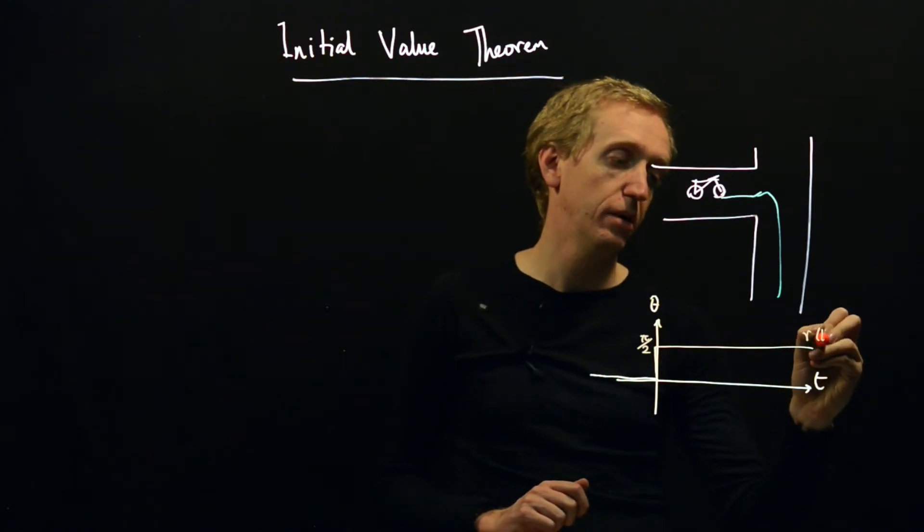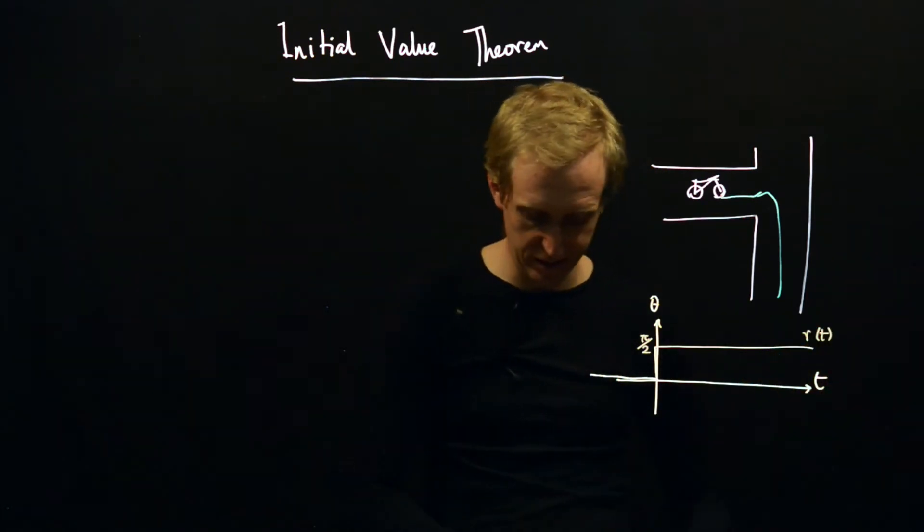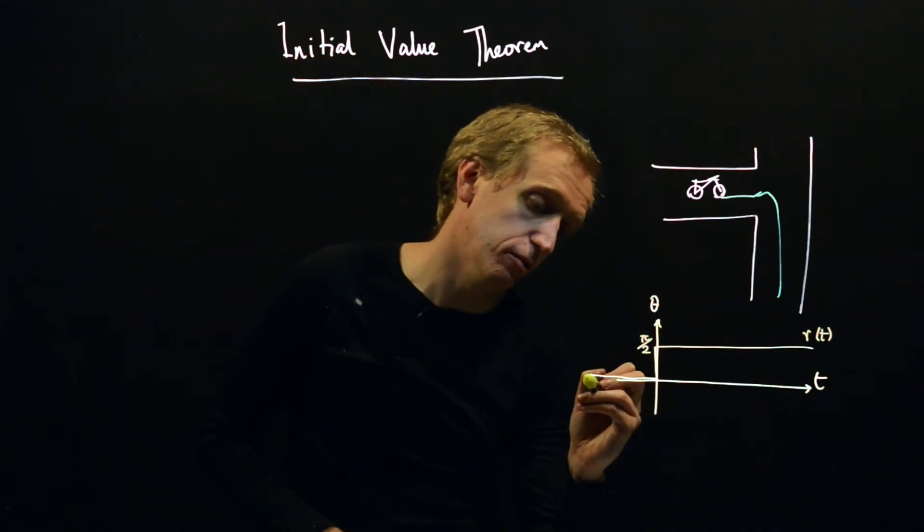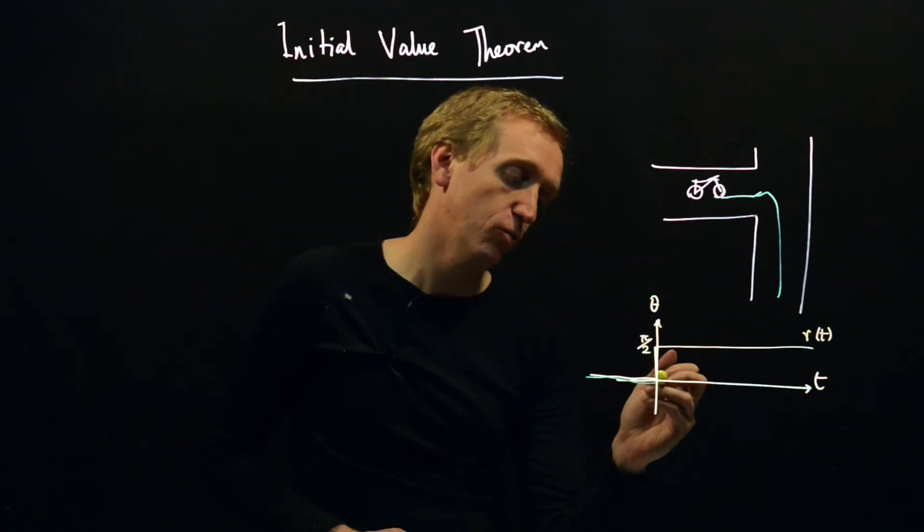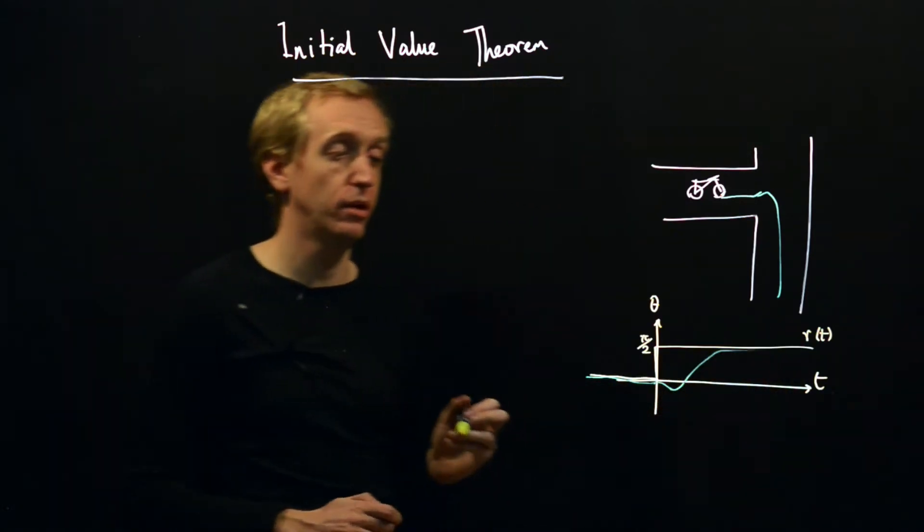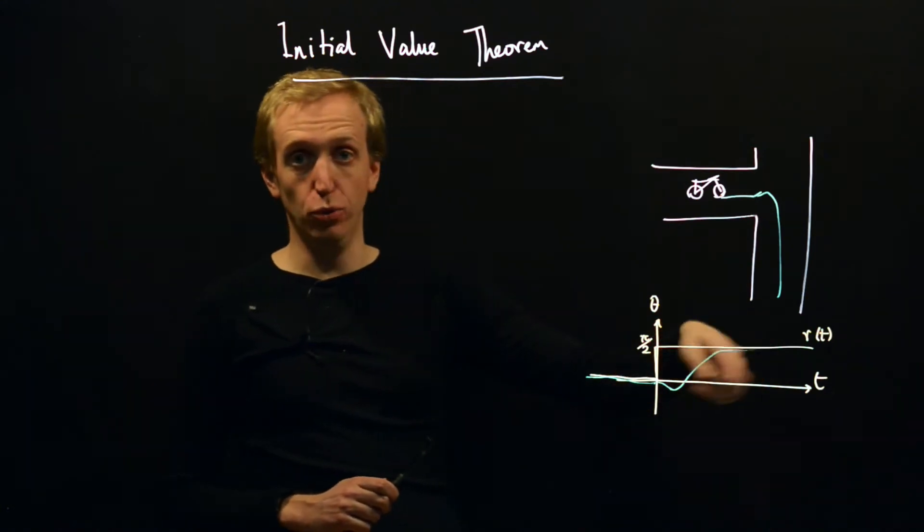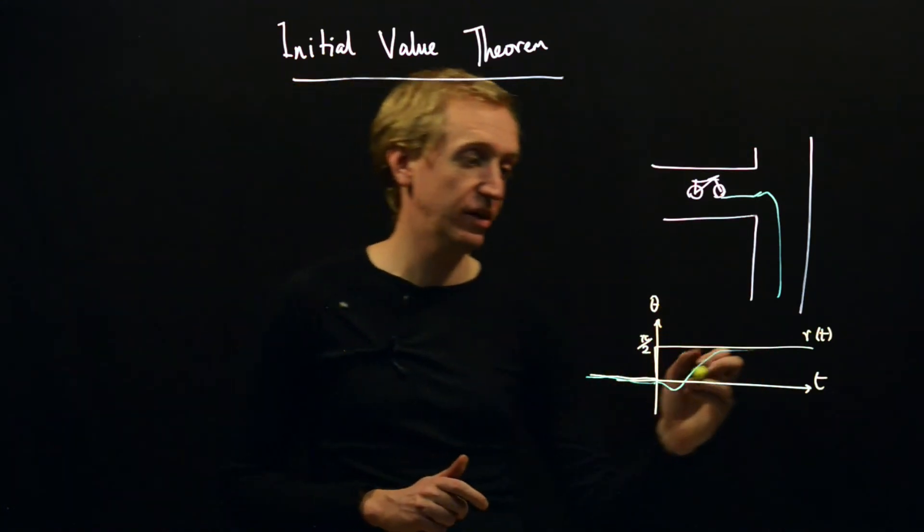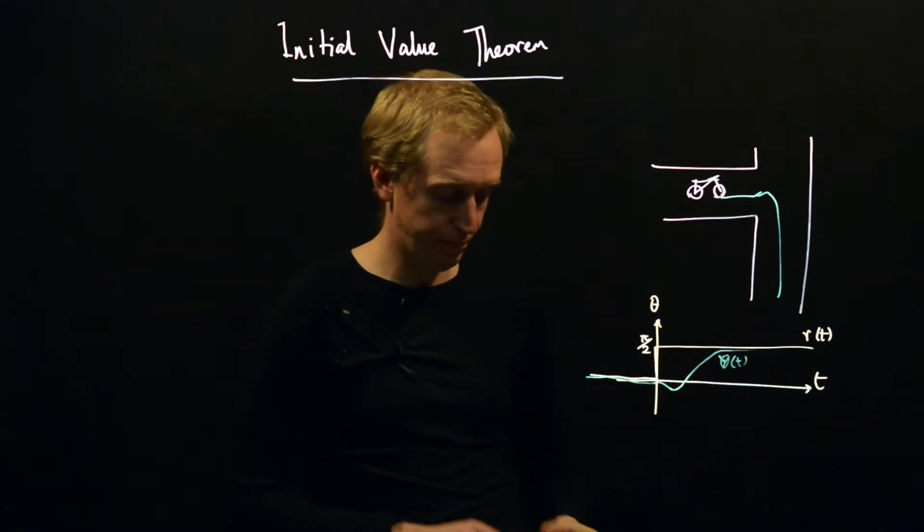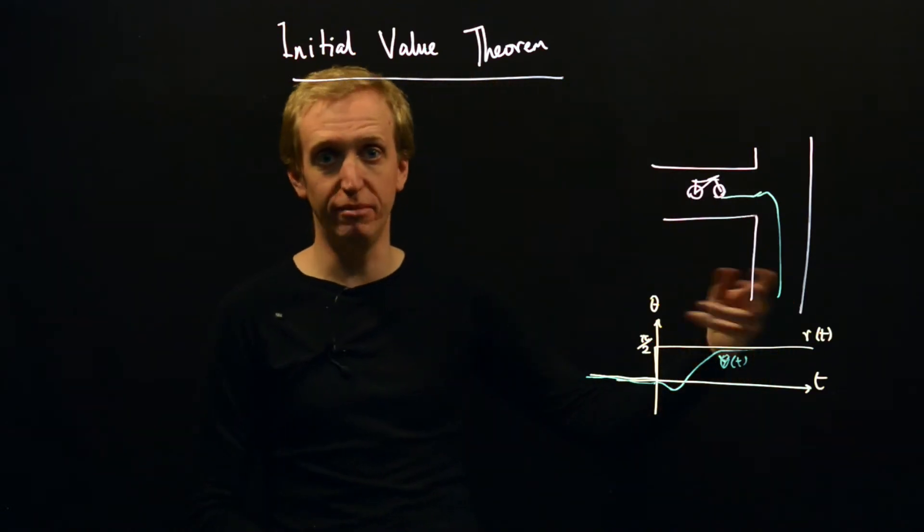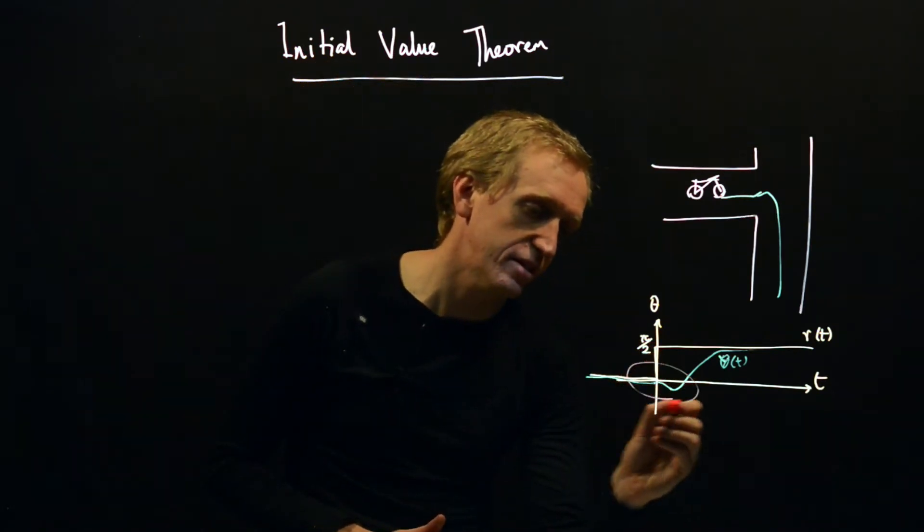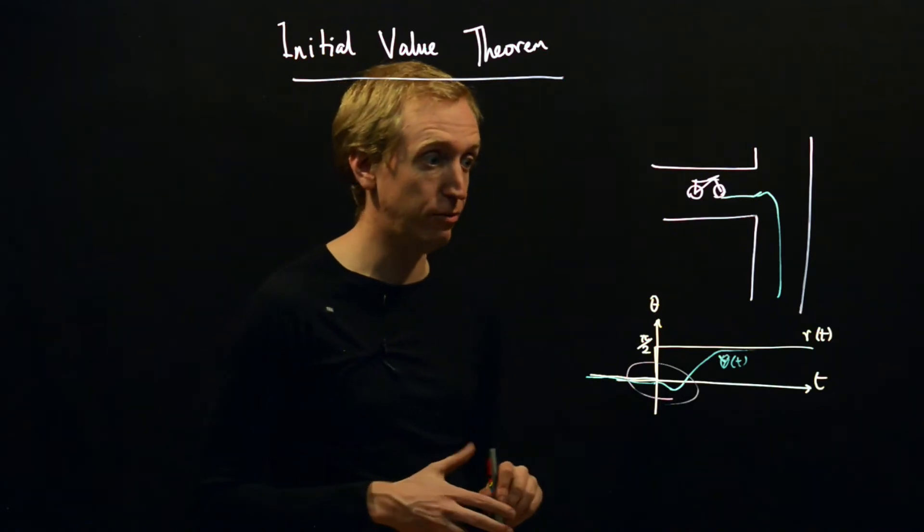So this is our reference trajectory. The claim is on your bike what happens is you're going along straight, want to turn right, I go slightly left and then I go up and eventually I go right again. We've got the tools to describe this long-term behavior. The final value theorem could be used to explore this long-term behavior, and we're going to be focusing in on this initial behavior using the initial value theorem.